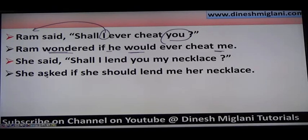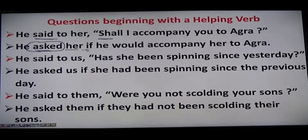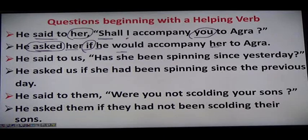He said to her, 'Shall I accompany you to Agra?' He asked her if he would accompany her to Agra — because 'I' as first person changes to 'he' as subject, and 'you' as second person changes to 'her' as object. He said to us, 'Has she been spinning since yesterday?' He asked us if she had been spinning since the previous day — present perfect continuous changes to past perfect continuous.